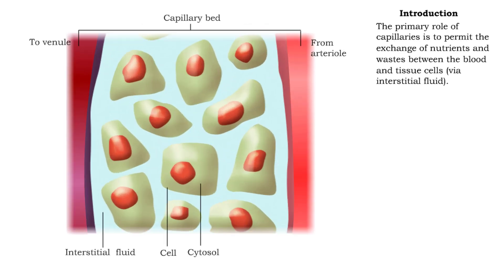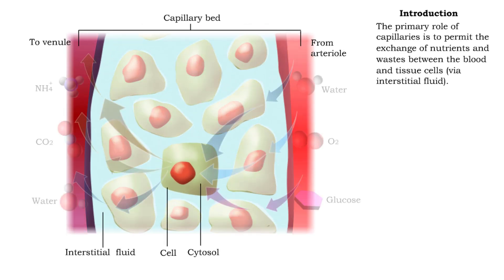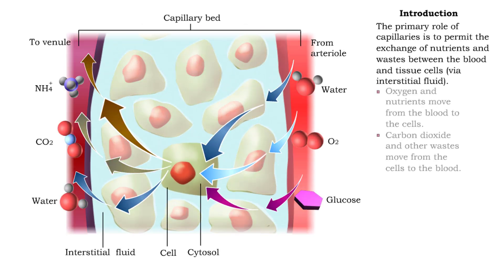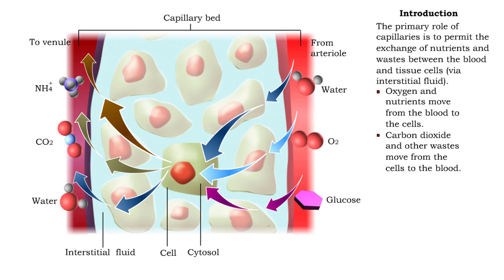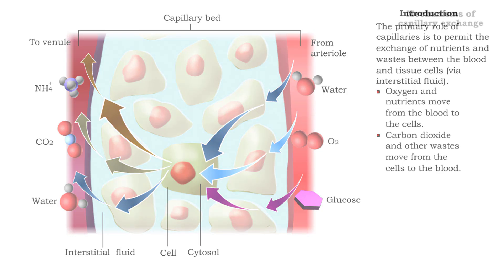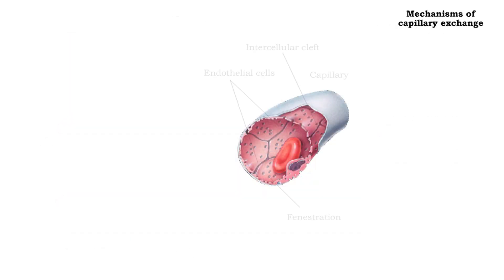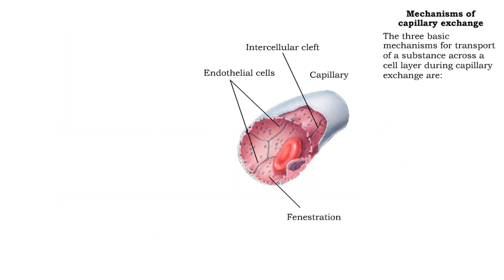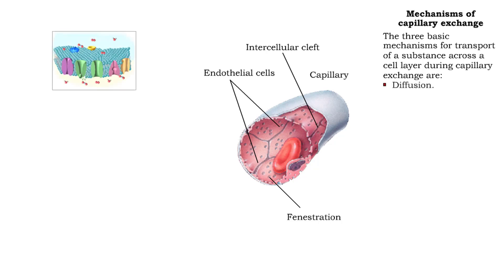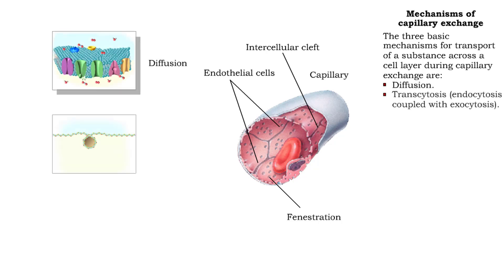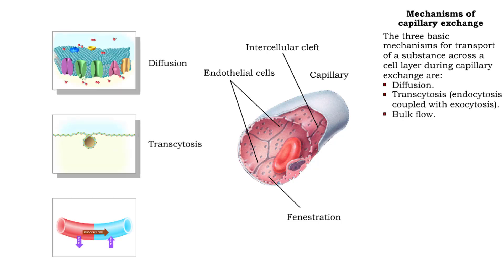The capillaries permit the exchange of nutrients and wastes between the blood and tissue cells. Capillary exchange occurs via three basic mechanisms: diffusion, transcytosis, and bulk flow.